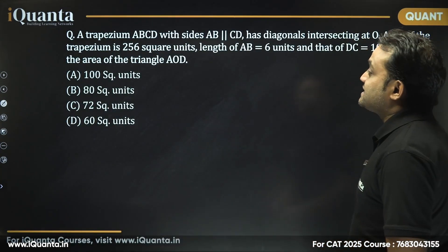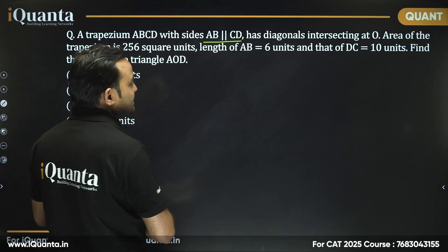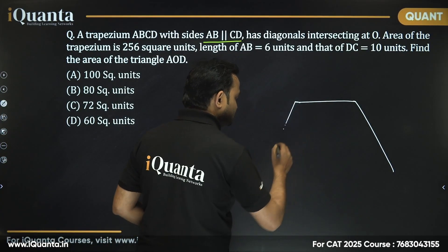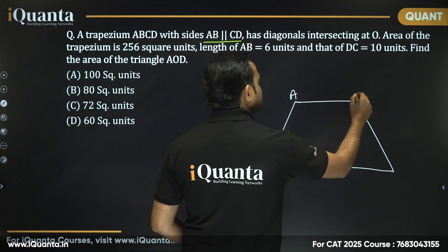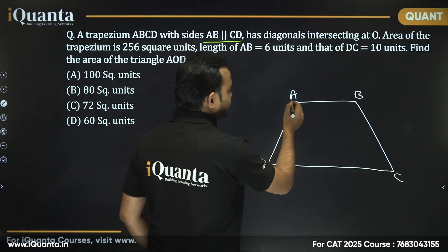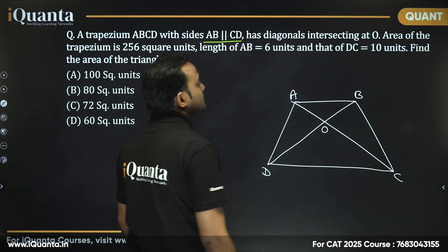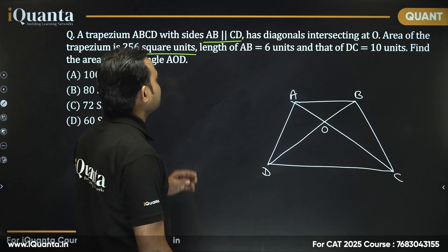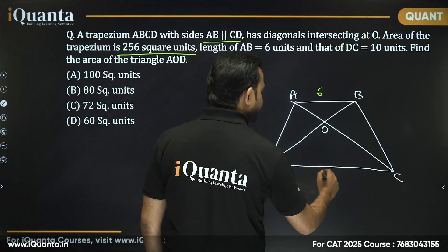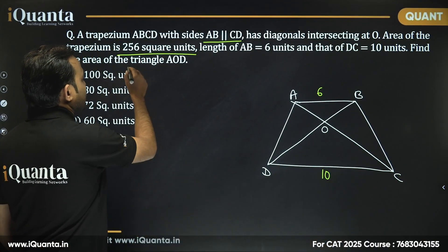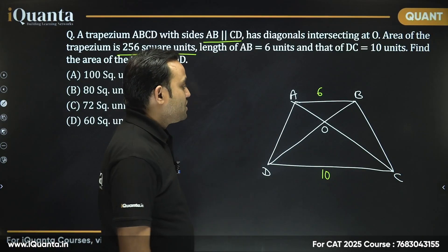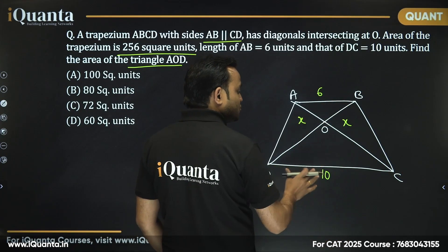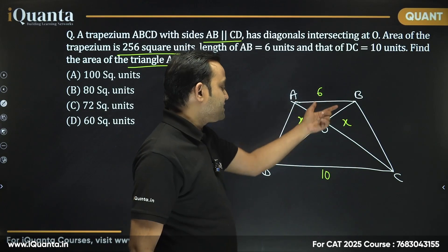First question: trapezium ABCD with AB parallel to CD has diagonals intersecting at O. Let's draw trapezium ABCD where AB is parallel to CD, with diagonals intersecting at O. The area of the trapezium is 256 square units, length of AB is 6, length of DC is 10. Find the area of triangle AOD. Now, we know if two triangles share a common vertex their areas relate. AB to DC is 6 to 10, which simplifies to 3 to 5.